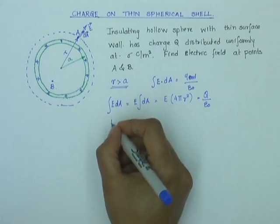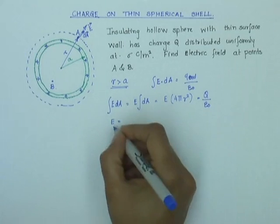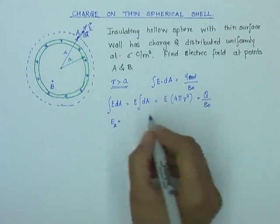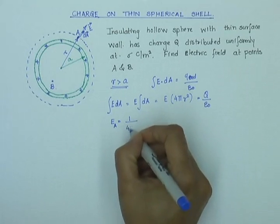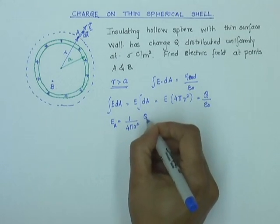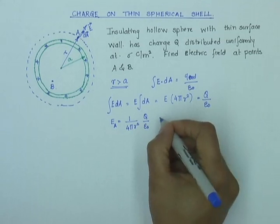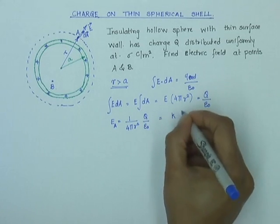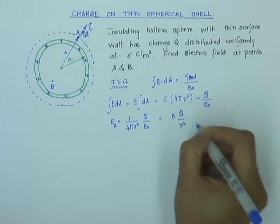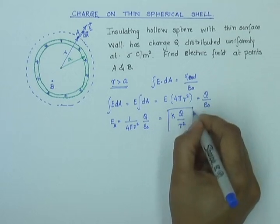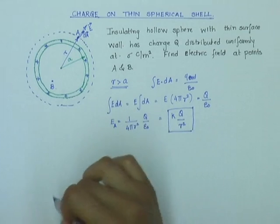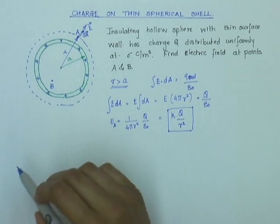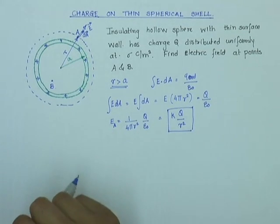From that I can get E at point A equals 1 over 4 pi R squared Q over epsilon zero. That can be written as K Q over R squared, since 1 over 4 pi epsilon zero is K. This is my electric field at point A due to a hollow sphere with total charge Q distributed uniformly over it.